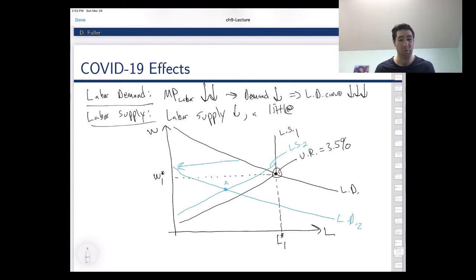Now if we keep our downwardly rigid wage assumption, which is a pretty good one, our new equilibrium point is going to be where that wage meets the labor demand curve. And so we're going to see a very large decrease in employment as a result of this because of the decrease in labor demand and the downwardly rigid wage.